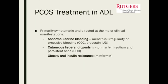Treating the adolescent patient suspected of PCOS is really a clinical diagnosis — the patient fits the picture of irregular cycles with signs of hyperandrogenism. The approach depends on what we're trying to treat. If it's the abnormal uterine bleeding — irregularity or excessive bleeding — combined oral contraceptives work well.